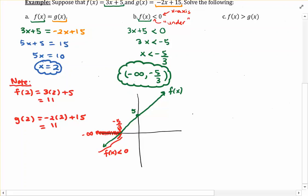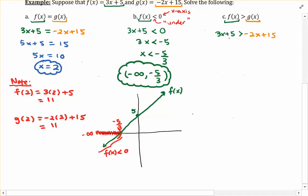Let's move on to part C. We have f of x greater than g of x, so we replace f of x with 3x plus 5 and set that greater than g of x, which is negative 2x plus 15. Adding 2x to both sides makes the left-hand side 5x plus 5, still greater than 15 on the right. Subtracting 5 from both sides gives 5x greater than 10, and dividing both sides by 5 — no need to reverse the inequality symbol — gives x greater than 2.